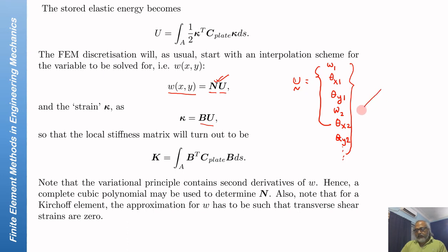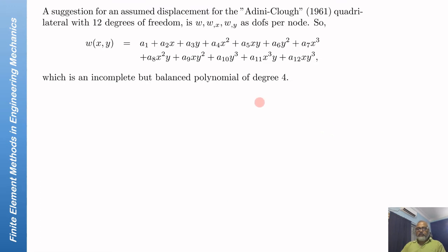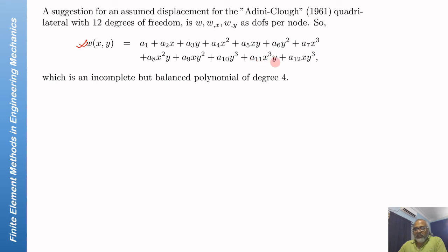The first task is to find a proper shape function using the assumed displacement method. The element is of uniform thickness T and has four nodes. With 12 degrees of freedom, we can approximate W with a polynomial containing 12 terms with 12 undetermined constants. This polynomial contains all terms up to third order, and for the fourth order it has two terms — it is an incomplete fourth-degree polynomial.